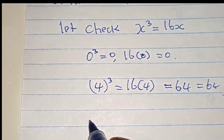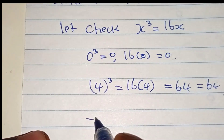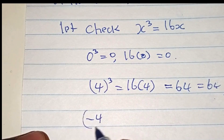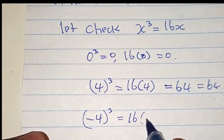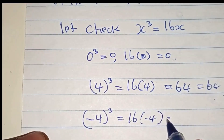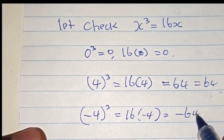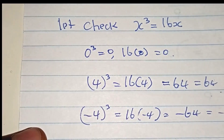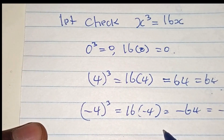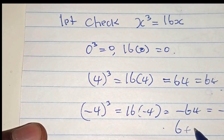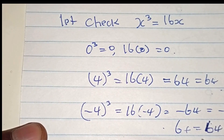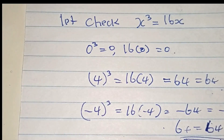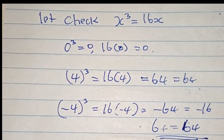x equals to minus 4 — substitute it. Minus 4 cubed is equal to minus 64, and 16 times minus 4 equals to minus 64, which implies that 64 is equal to 64. This is satisfied. Do not forget to subscribe.